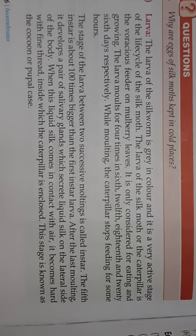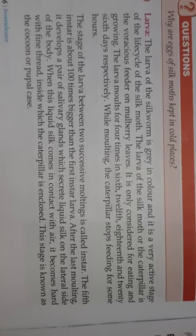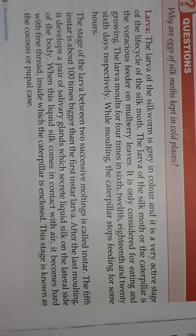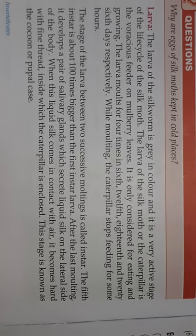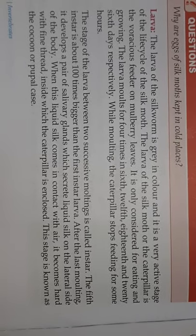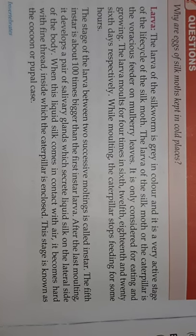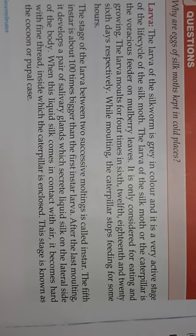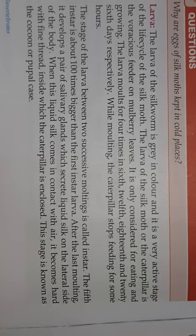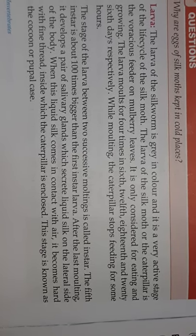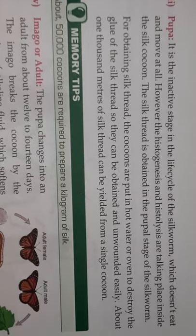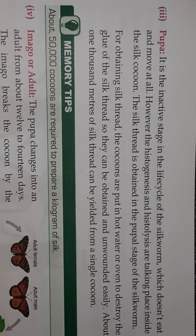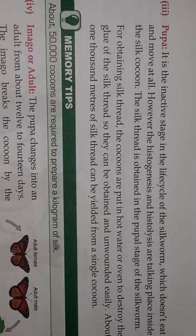After the last moulting, the larva develops a pair of salivary glands which secrete liquid silk on the lateral sides of the body. When this liquid silk comes in contact with air, it becomes hard as a fine thread. The structure inside which the caterpillar is enclosed is called a cocoon, also known as the pupal case. The pupa is an inactive stage in the life cycle of the silkworm — it does not eat or move at all.